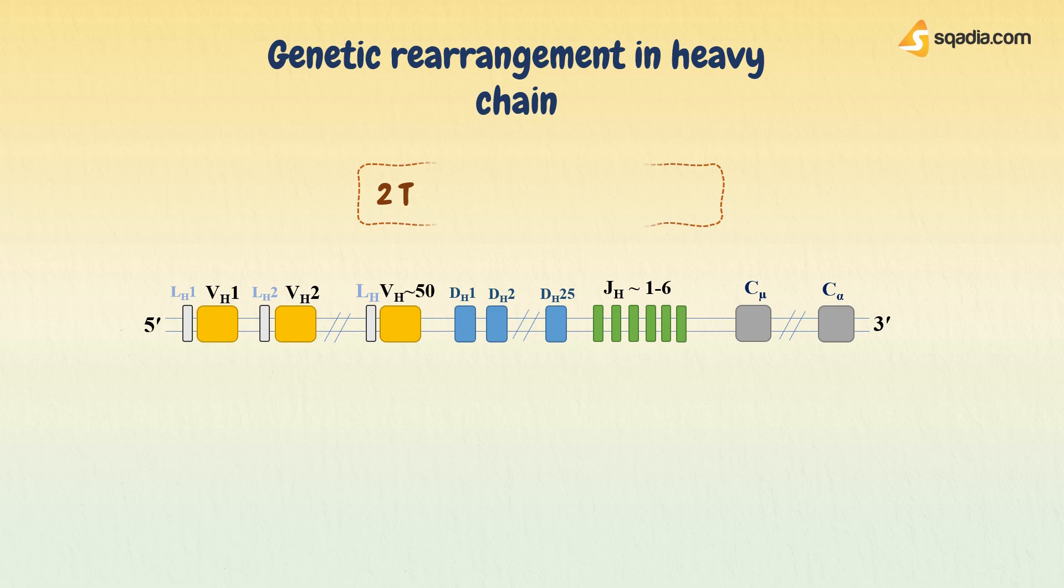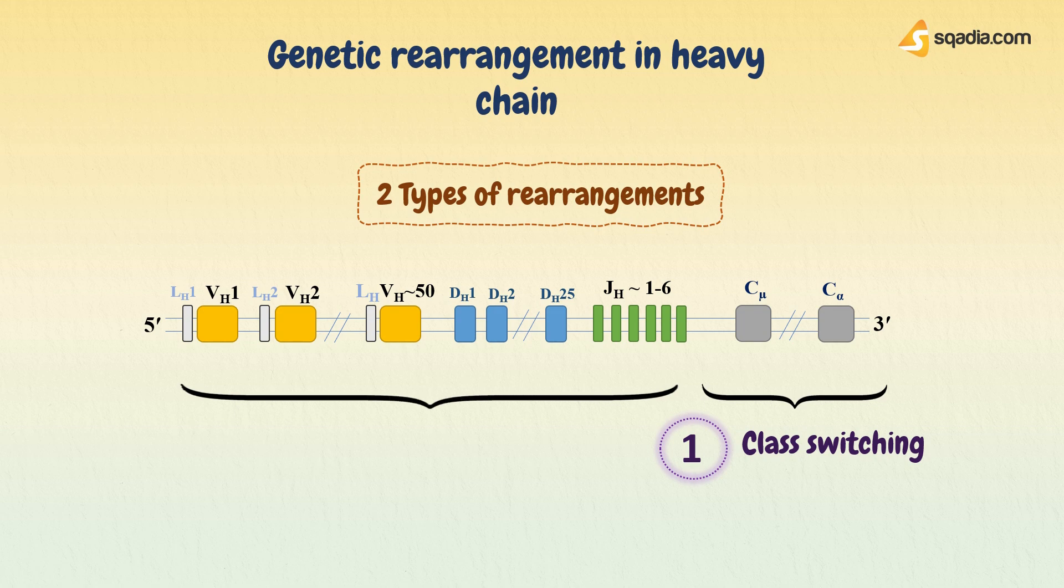Now here two types of rearrangement occur. First in constant region, that is also called class switching. And second, in variable region as well, called VDJ recombination.